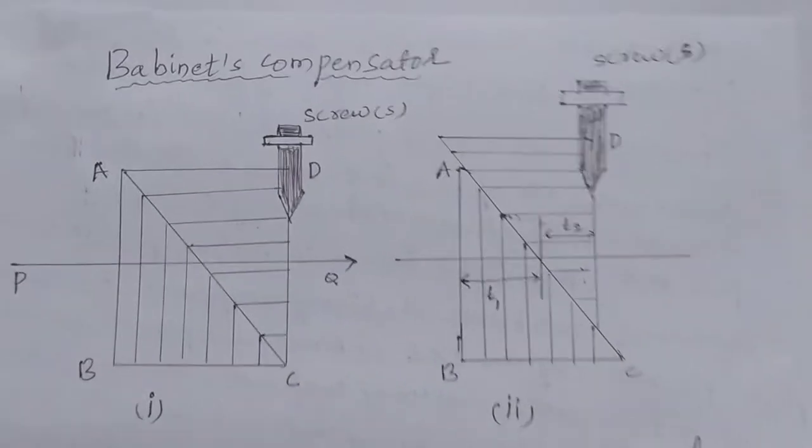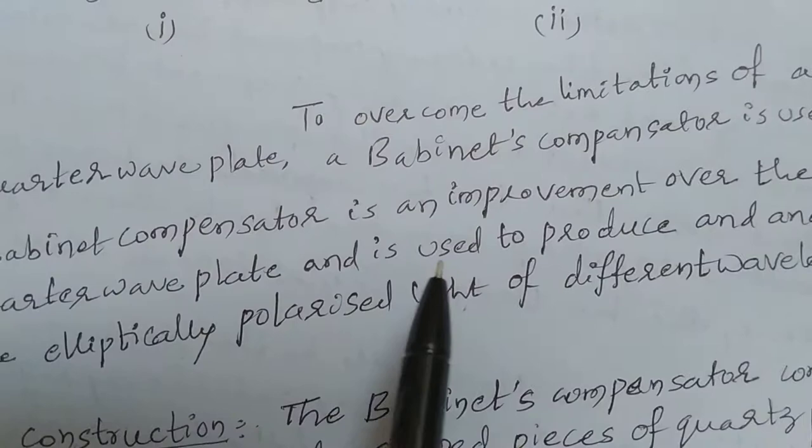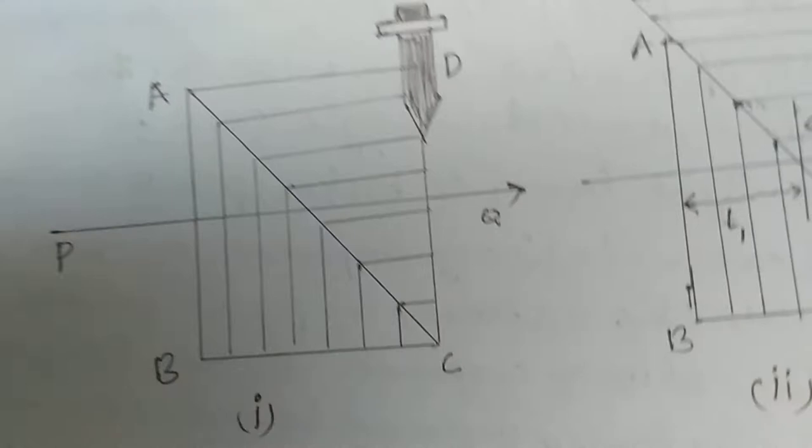Good afternoon students. Now we shall discuss the Babinet compensator. To overcome the limitations of a quarter wave plate, a Babinet compensator is used. A Babinet compensator is an improvement over the quarter wave plate and is used to produce and analyze optically polarized light of different wavelengths. Now we shall discuss the construction of the Babinet compensator.